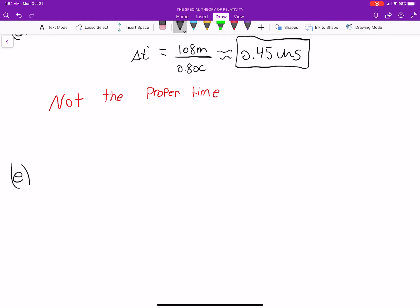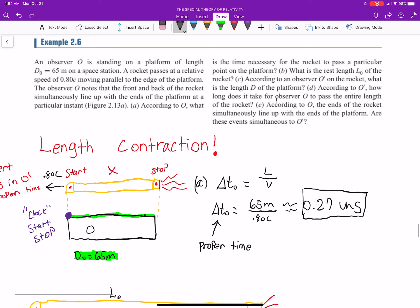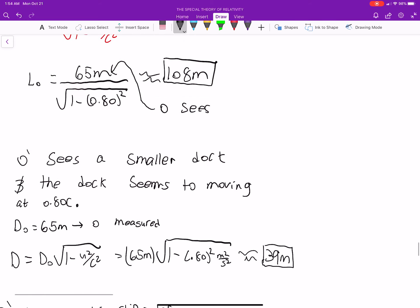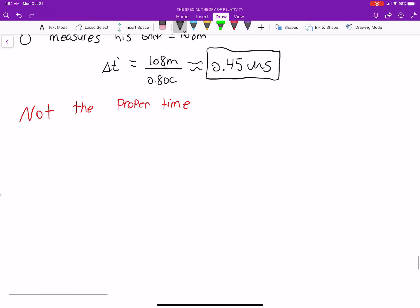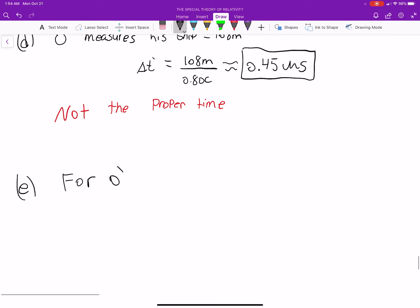Next up is E. According to O, the end of the rocket simultaneously lines up with the end platforms. Are these events simultaneous to O-prime? Well, for O-prime let's think about O-prime's perspective. The ship is equal to 108 meters and the dock is 39 meters. So, this alone shows us no, they don't align.